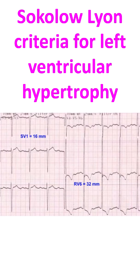Sokolov-Lyand published the criteria for left ventricular hypertrophy in the American Heart Journal in 1949. S-Wave in V1 plus R-Wave in V5 or V6 together should constitute more than 3.5 mV or 35 mm on a standard ECG.